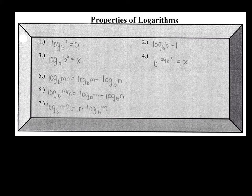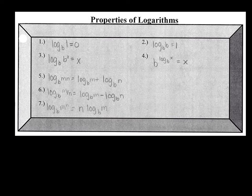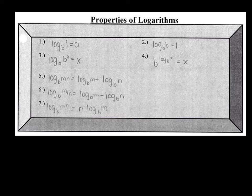Since we know how to evaluate things, we can understand that first property: log base B of 1 equals zero. Anything to the zero power is going to equal one, so that's why if your argument is one, it doesn't matter what the base is — your expression equals zero. For the third property, if you have log base B of B to the X, and the base of the argument is the same as the base of your log, they cancel and you're left with just X.